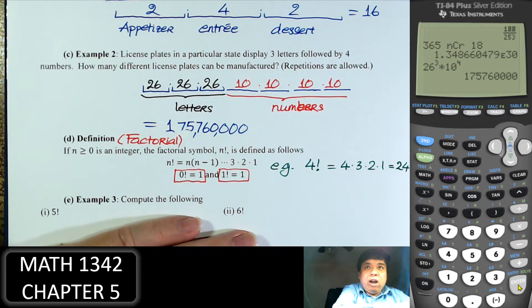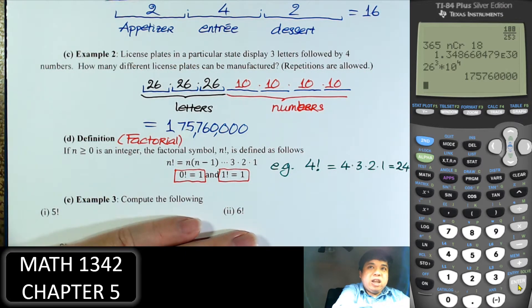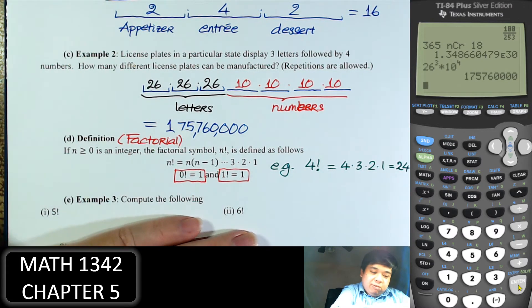Factorial is only for whole numbers, so we don't have factorial of 5.5 at this level. Of course, there's a way to define a factorial for decimals as well, but we're not studying that in this class.